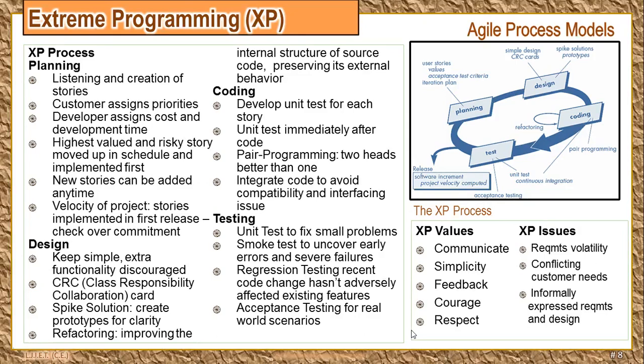Velocity of project means the number of stories that were implemented in the first release. After the release is given, there is a check on over-commitment. If there is a lot of over-commitment, the software team delays the release dates so that new and changing requirements can be incorporated in the process.